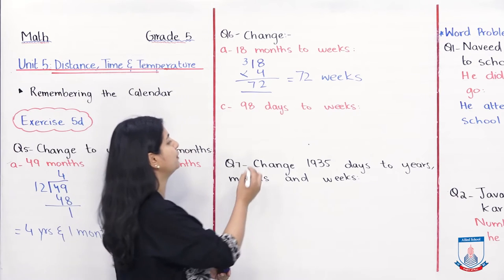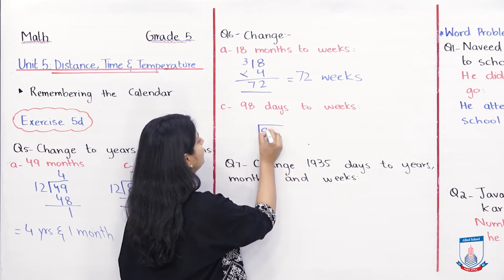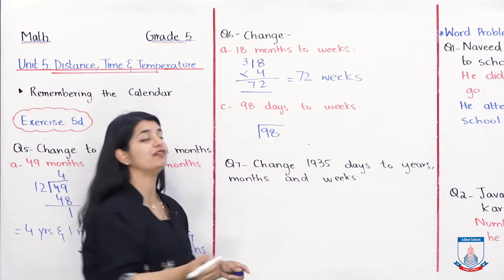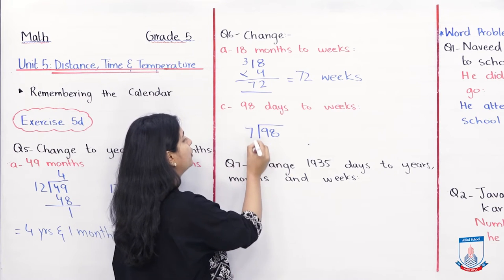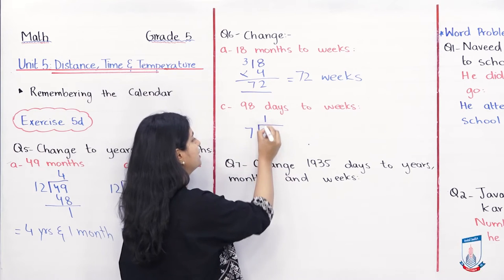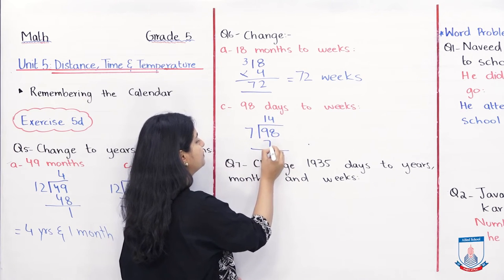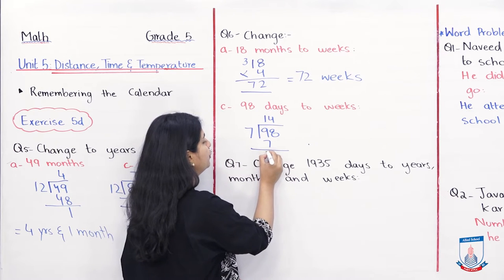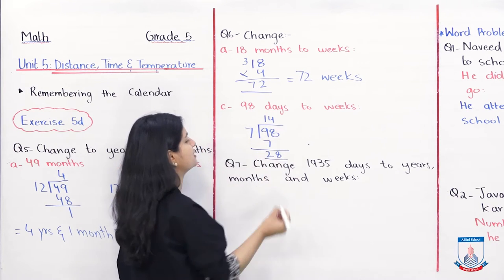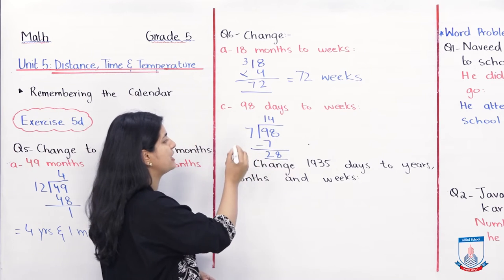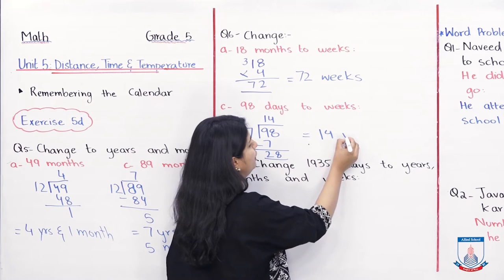That gives us 72 weeks. In this way you will also do 98 days — divided by 7, because there are 7 days in a week. When you divide: 7 times 14 is 98. So 98 days equals 14 weeks.